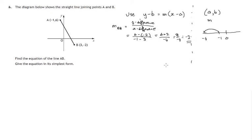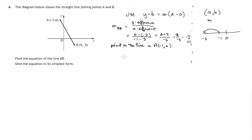So our gradient is minus 2, and we also need the point we're going to use for the formula — a point on the line. Well, you choose; it could be either point. Let's use negative 1, 6. You can check you'll get the same answer if you use the point 3, negative 2.